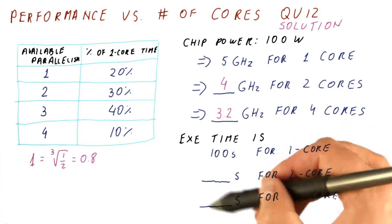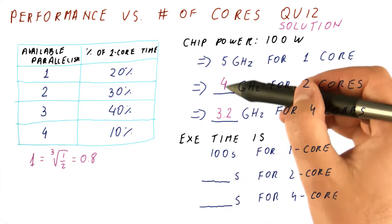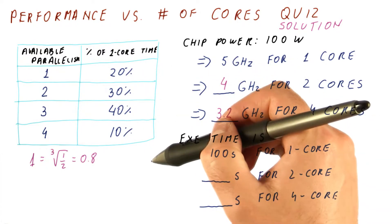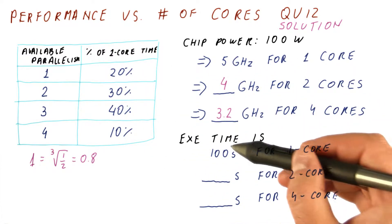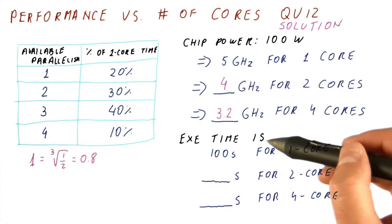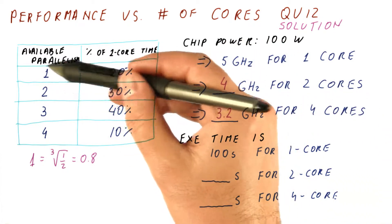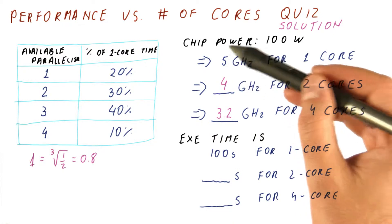For execution time, we need to account for the change in frequency as well as the change in parallelism. So this is what we get. We get 100 seconds when we run all of these pieces at just one core at 5 gigahertz.